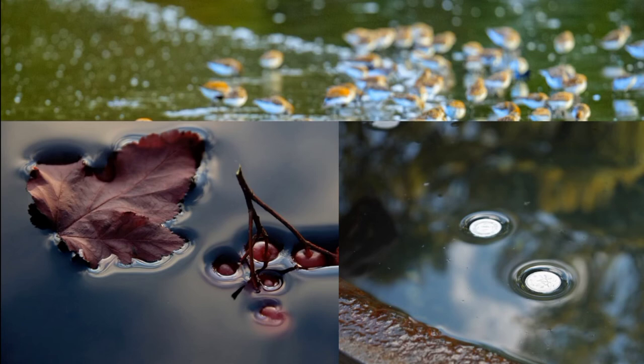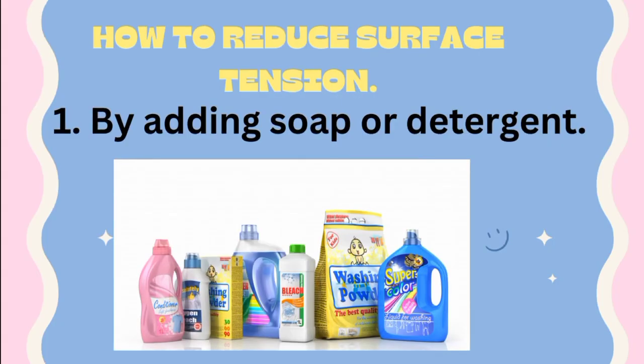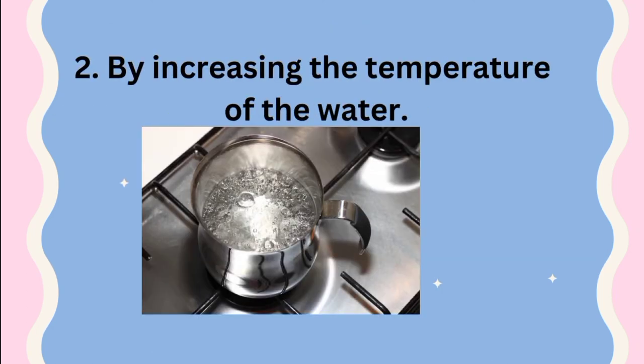So how do we reduce surface tension? Now we're going to be looking at the ways we can reduce surface tension. One: by adding soap or detergent. You put soap or detergent in your water and you reduce surface tension.